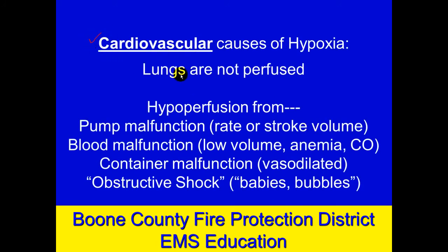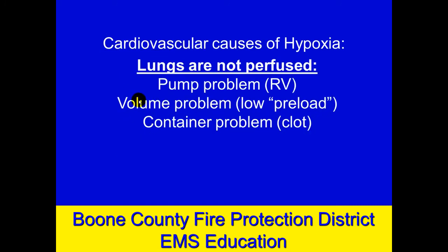The first one we'll take is the cardiovascular system. Perhaps it's a problem with the lungs or a problem systemically. How would the lungs not be perfused? Well, perhaps the right ventricle of the heart is not pumping effectively and blood's not being supplied to the lungs. Maybe there's a problem with the amount of blood coming into the heart — which is preload. The heart can only pump out what it gets in, so maybe there's an inappropriately reduced preload.